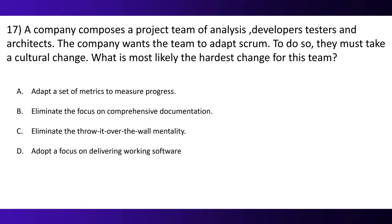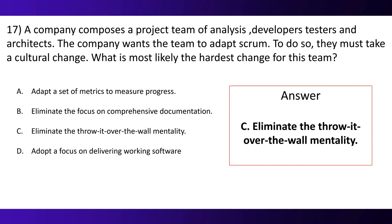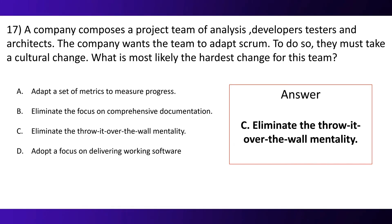Question 17. A company composes a project team of analysts, developers, testers, and architects. The company wants the team to adopt Scrum. To do so, they must take a cultural change. What is most likely the hardest change for this team? Option A, adapt a set of metrics to measure progress. Option B, eliminate the focus on comprehensive documentation. Option C, eliminate the throw-it-over-the-wall mentality. Option D, adapt a focus on delivering working software. And the correct option is C — eliminate the throw-it-over-the-wall mentality.